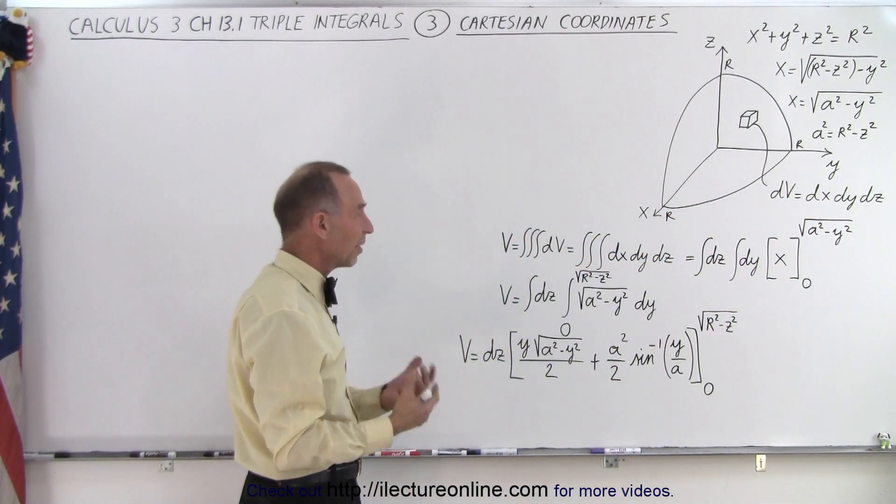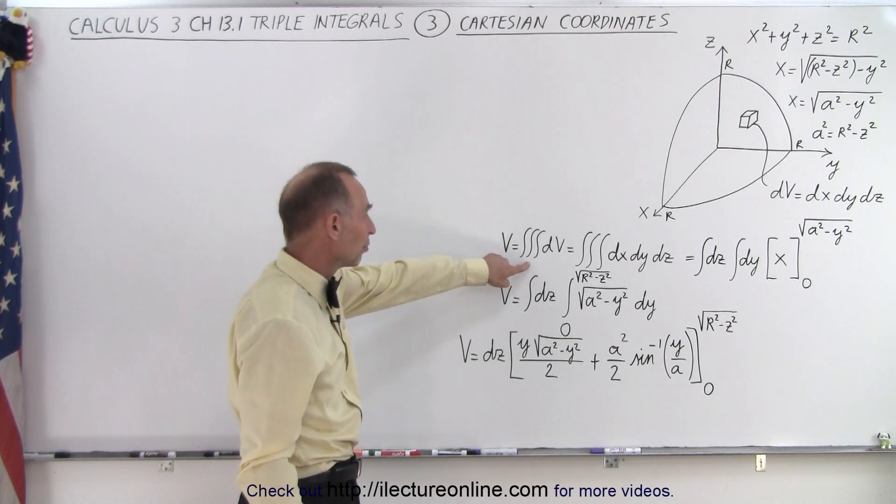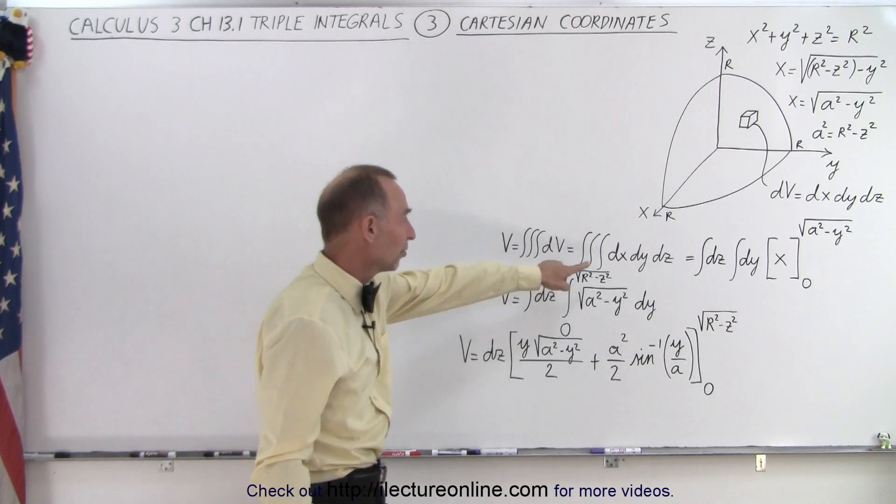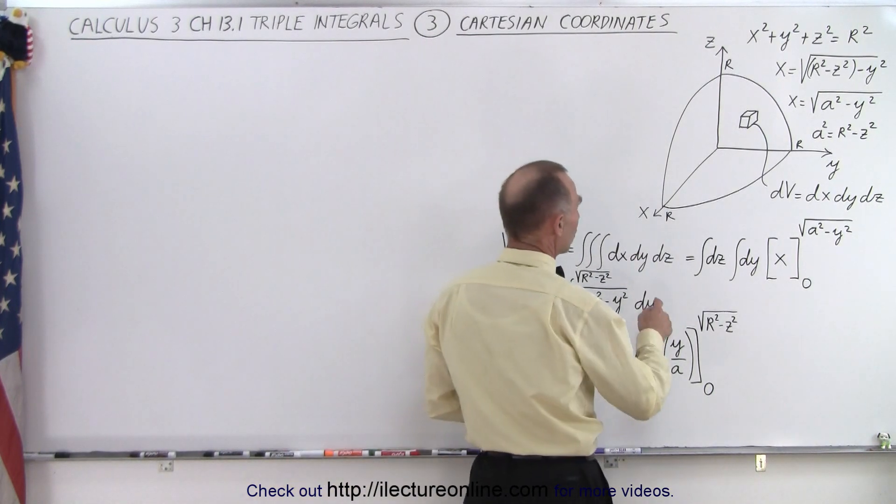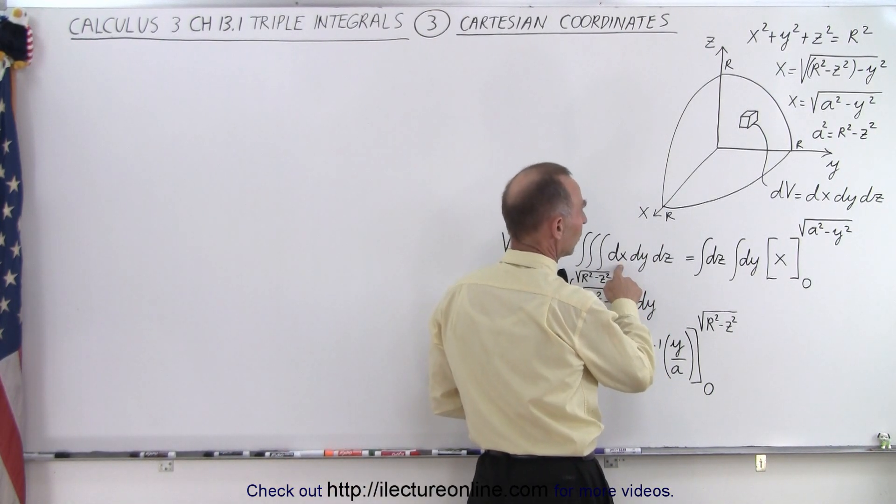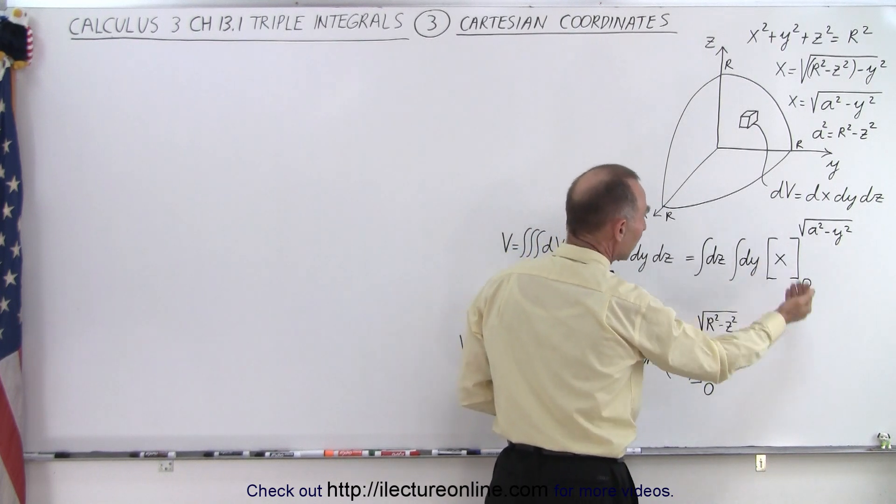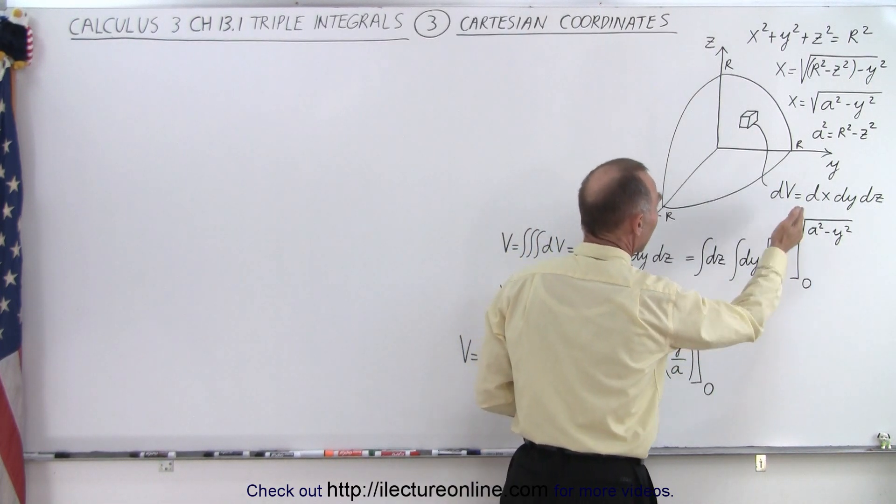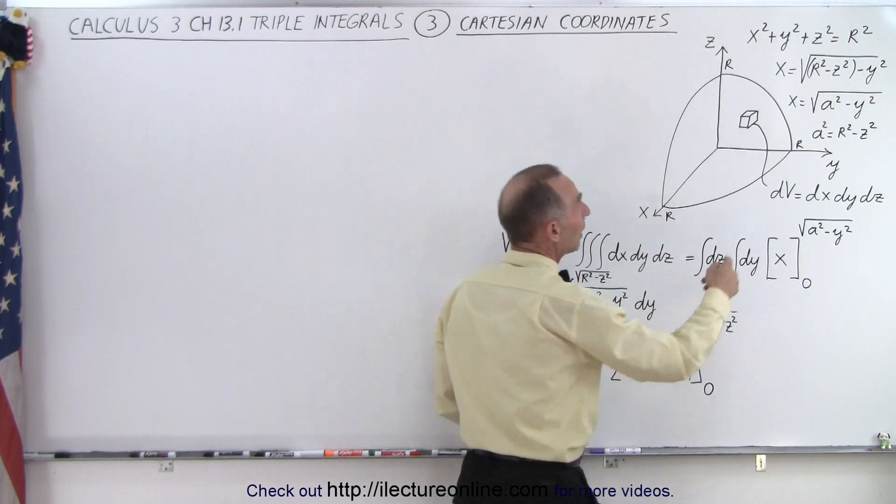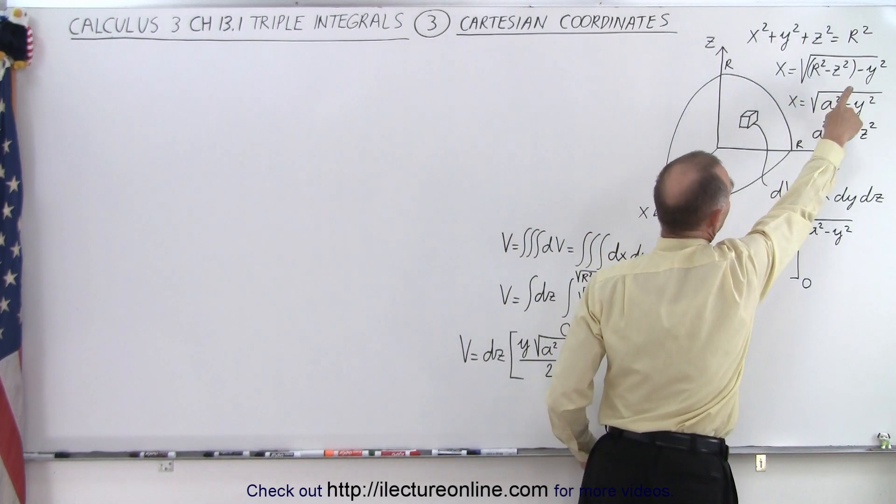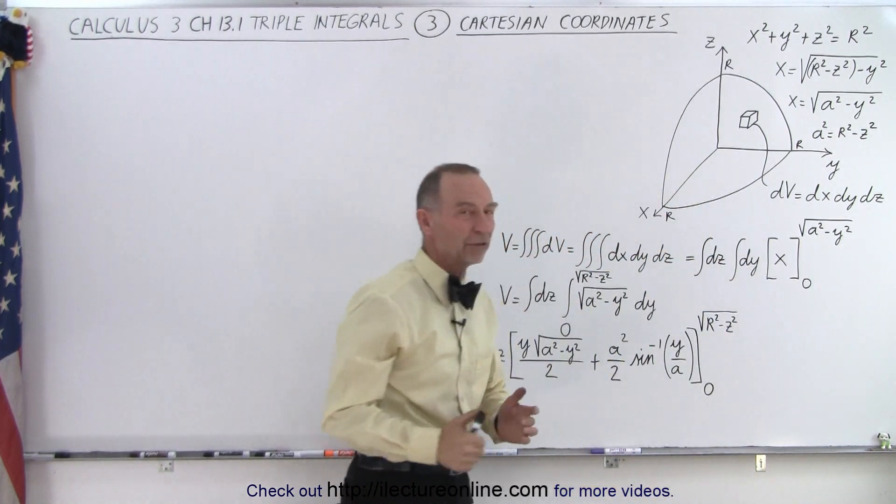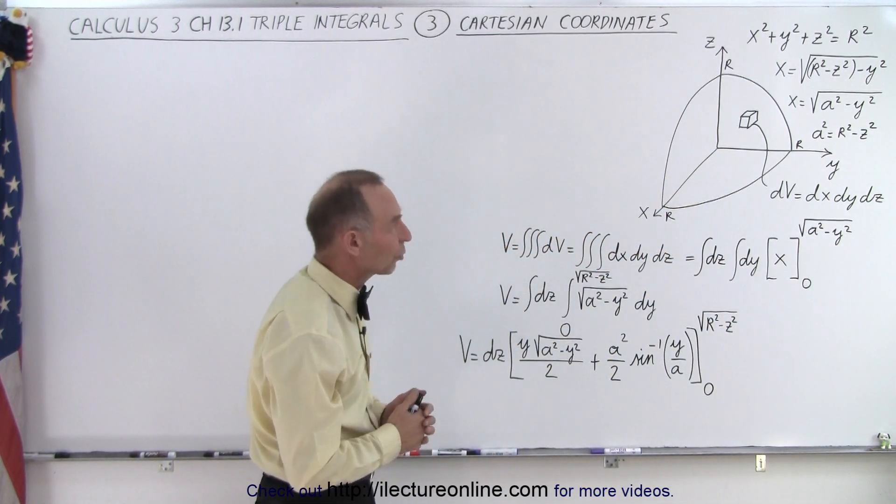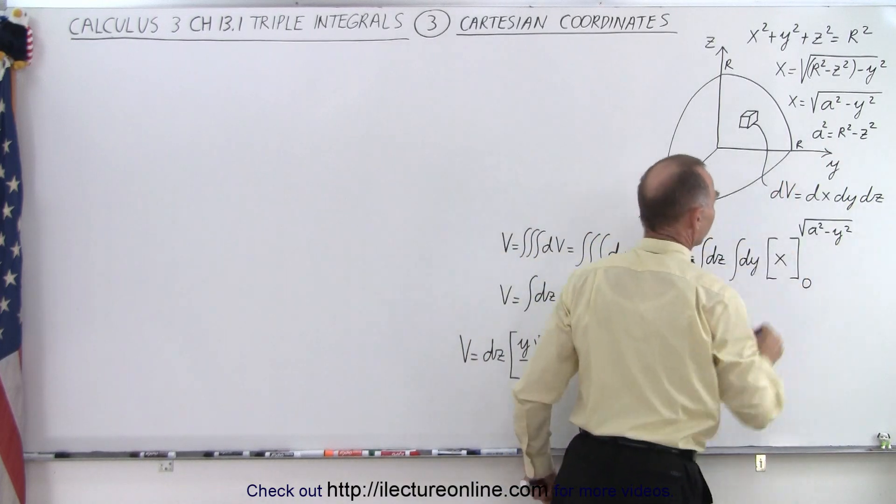So now we're going to try to find the volume and that's going to be the triple integral over dv which is dx dy dz and we're first going to integrate over dx. So the integral of dx is simply x and the limits of integration is from 0 to what x is equal to. We're going to simplify it by simply writing it as √(a² - y²) where a² is r² - z².